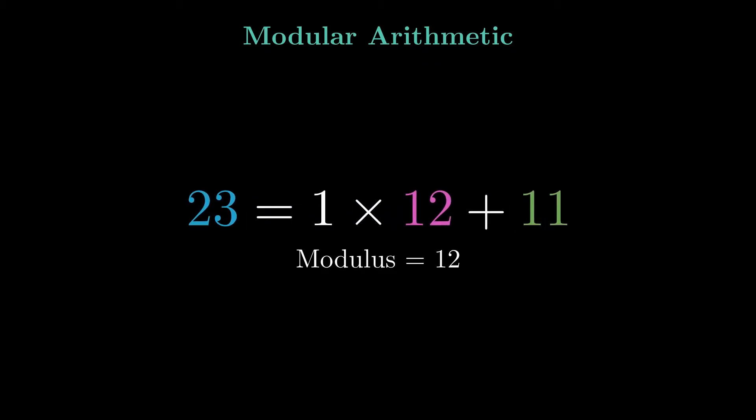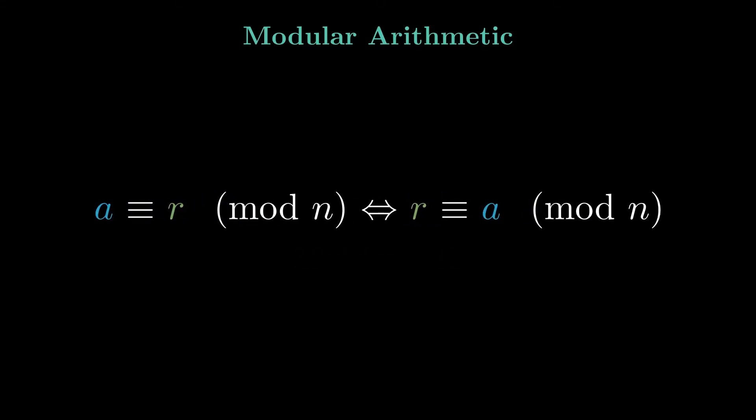The key is, we are only interested in the remainder when a value is divided by 12. When we say a is congruent to r modulo n, it means that a and r leave the same remainder when divided by n. The phrase modulo n in parentheses applies to the entire equation.